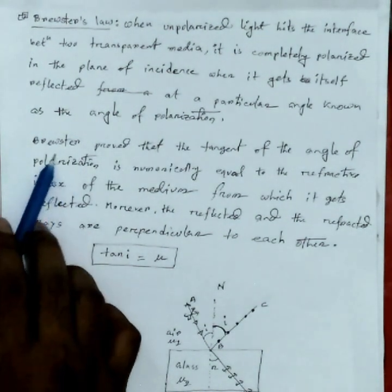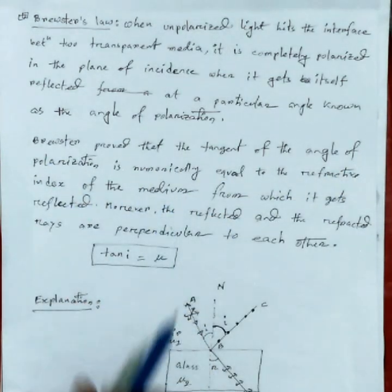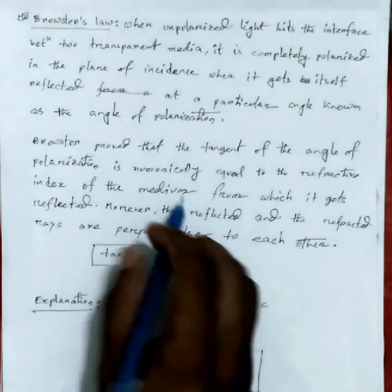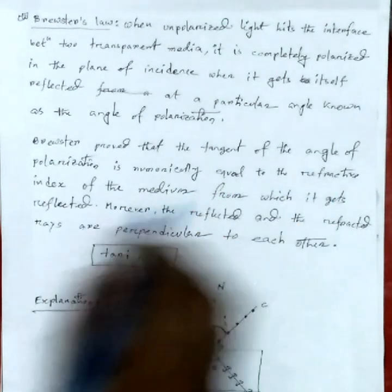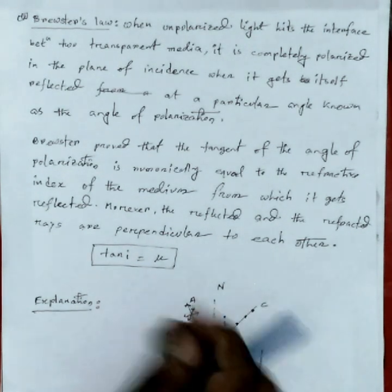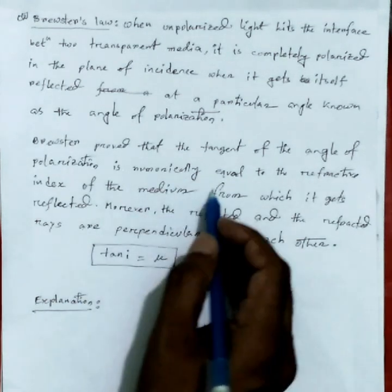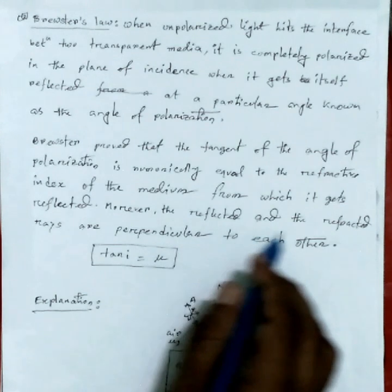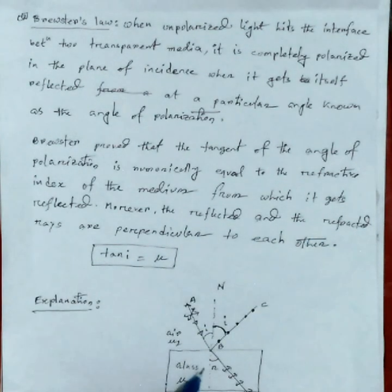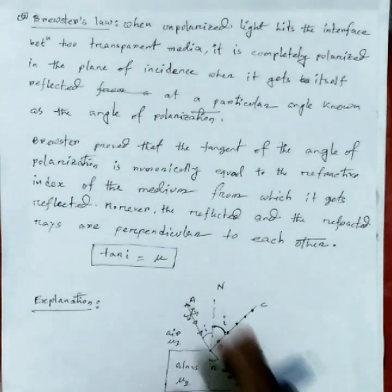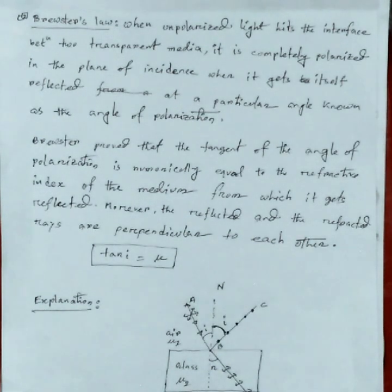Brewster proved that the tangent of the angle of polarization — the tangent of i — is numerically equal to the refractive index of the medium. That is, tan(i) = μ, the refractive index of the transparent medium for which the light gets reflected. At this angle, the reflected and refracted rays are perpendicular to each other.